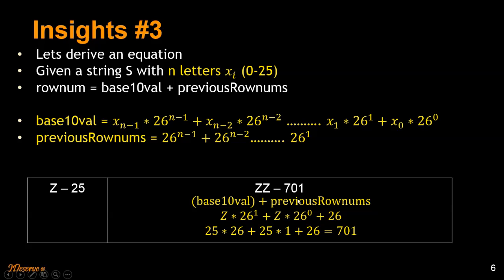So what is the value of previous row numbers? 26 power n minus 1 which is 2 minus 1, 26 power 1. Let's go ahead and try to put these two together.